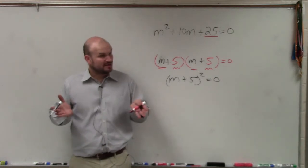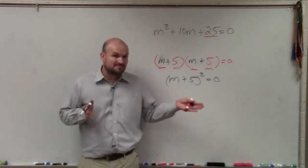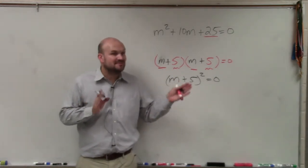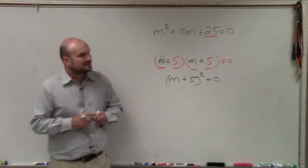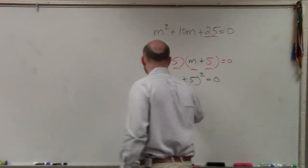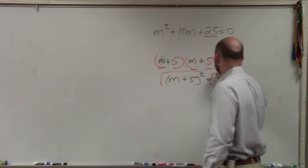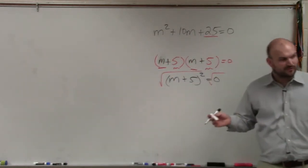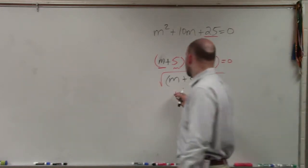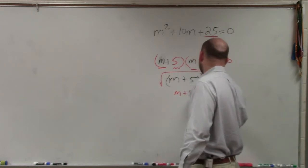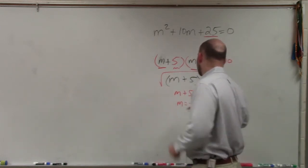x times x is x squared. m times m is m squared. m plus 5 times m plus 5 is m plus 5 squared. So now, the way we've got negative 5 is you undo the square root. 0 is not positive nor negative. So there is no plus or minus 0. So you'd have m plus 5 equals 0. m equals negative 5.